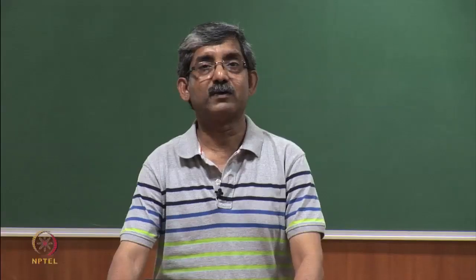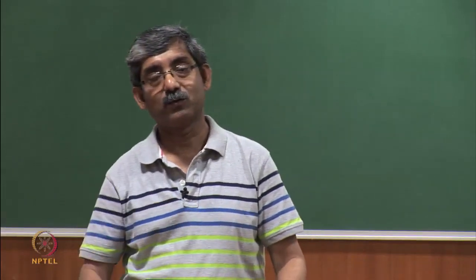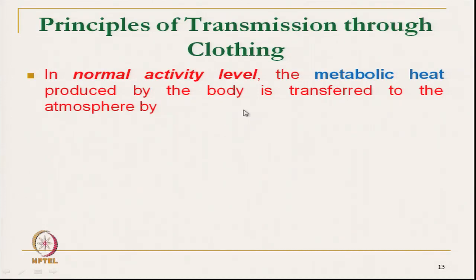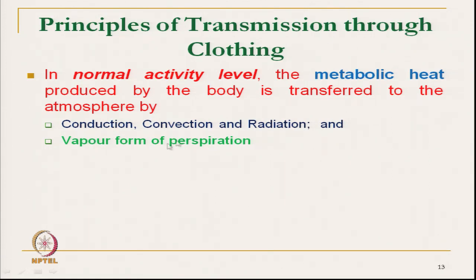Now, principles of moisture transmission through clothing — how does liquid get transmitted through the clothing? In normal activity level, when metabolic heat produced by the body is transmitted to the atmosphere by conduction, convection, and radiation, moisture will also get transmitted in vapour form. In normal activity level, we do not perspire in sweat form. Normally we release whatever metabolic heat we produce in terms of dry heat — that is conduction, convection, and radiation — and also in the form of vapour.